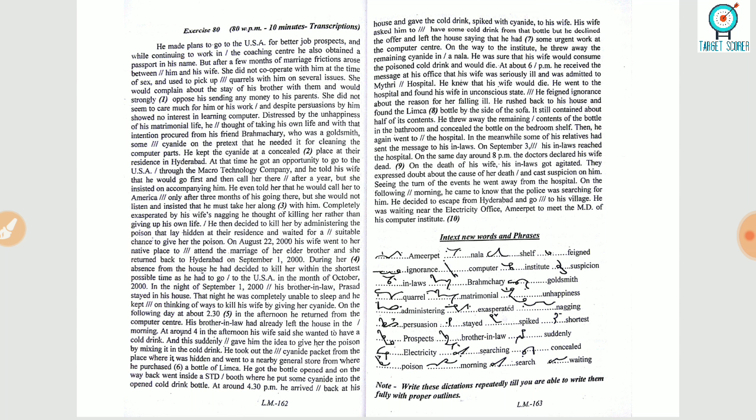he thought of taking his own life and with that intention procured cyanide from his friend Brahmachari, who was a goldsmith, on the pretext that he needed it for cleaning the computer parts. He kept the cyanide at a concealed place at their residence in Hyderabad.